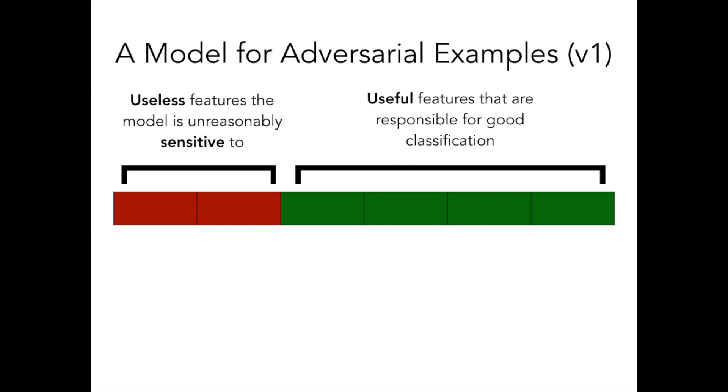We also have some useless features that, through some error in learning, such as overfitting or sensitivity to label noise, the classifier puts an unreasonably large weight on. An adversary can change the decision of the classifier on any given input by just changing these sensitive features that don't make any sense to humans.